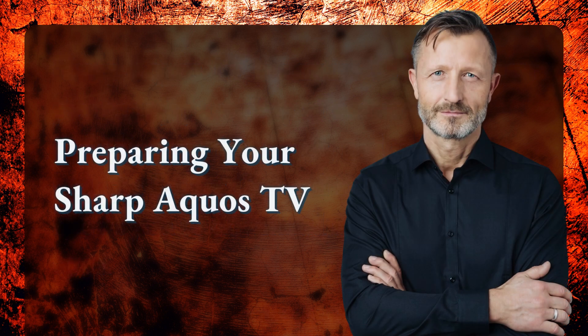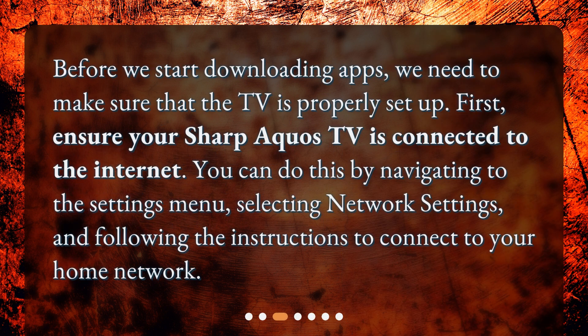Preparing your Sharp Aquos TV. Before we start downloading apps, we need to make sure that the TV is properly set up. First, ensure your Sharp Aquos TV is connected to the internet. You can do this by navigating to the settings menu, selecting network settings, and following the instructions to connect to your home network.